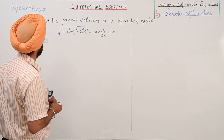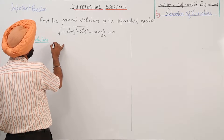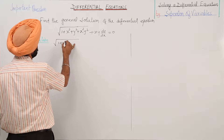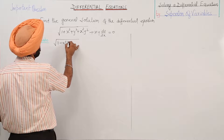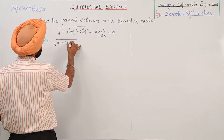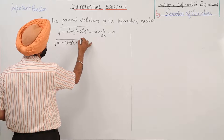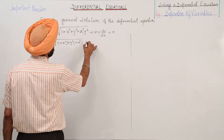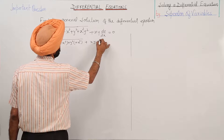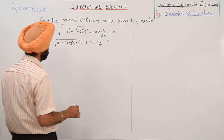Now the given question: 1 plus x square plus y square times 1 plus x square plus xy times dy by dx is equal to 0.